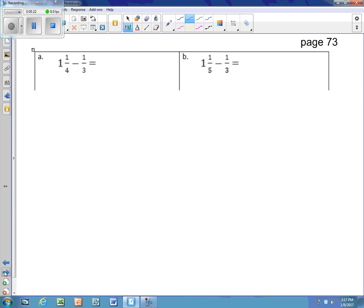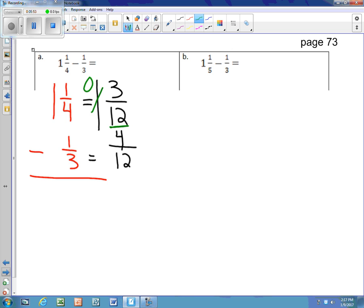Here we have 1 and 1/4 minus 1/3, and our common denominator between these two is 12. We have to bring over that whole number. 4 times 3 is 12, and 1 times 3 is 3. 3 times 4 is 12, and 1 times 4 is 4. So now we have to borrow, because we cannot do 3 minus 4. This is a 0. We have to add our 12 to our 3, and we end up with 15. And 15/12 minus 4/12 comes out to 11/12.